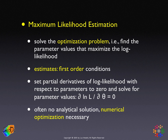Why zero? Because at the maximum of the function, the partial derivative — which is the slope — corresponds to the slope of the tangent to the function. At the maximum, the tangent is horizontal, so the slope is zero.